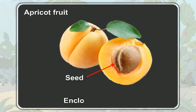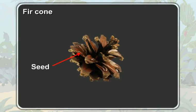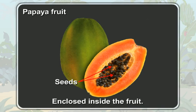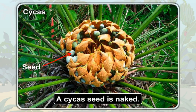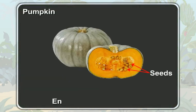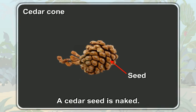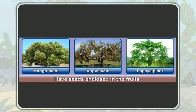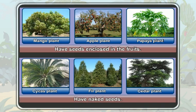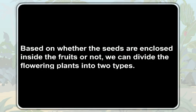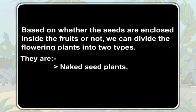An apricot seed is enclosed in a fruit, while a fir seed is naked. The papaya seeds are enclosed inside the fruit, while a cedar seed is naked. So, some plants have seeds enclosed in the fruit, while some plants have naked seeds. Based on whether the seeds are enclosed inside the fruit or not, we can divide the flowering plants into two types: naked seed plants and covered seed plants.